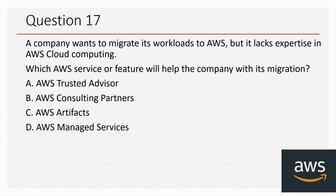Question 17: A company wants to migrate its workloads to AWS but lacks expertise in AWS cloud computing. Which AWS service or feature will help the company with its migration? The options are: A) AWS Trusted Advisor, B) AWS Consulting Partners, C) AWS Artifacts, and D) AWS Managed Services. The correct answer is D, AWS Managed Services.